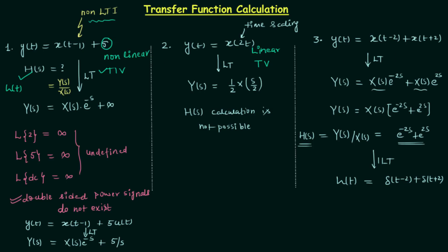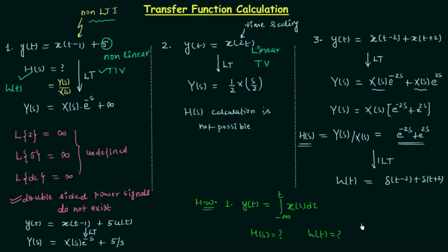Now we will move to the homework problem of this lecture. The system relationship is y(t) = integral from minus infinity to t of x(τ) dτ, and you are required to calculate the transfer function and, if possible, also the impulse response. I will end this lecture here. If you have any doubts you may ask in the comment section. From the next lecture we will discuss the impulse response and the convolution theorem.